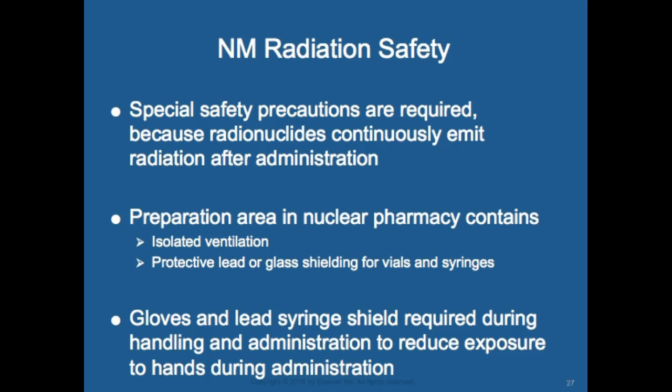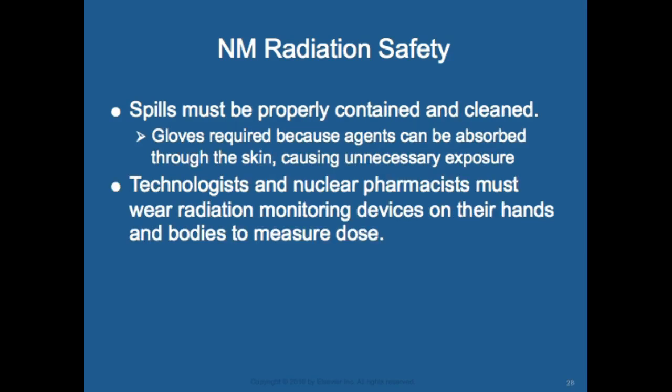Lead syringe shields are required during handling and administration to reduce exposure to the hands. Dose to the hands is a major concern for nuclear medicine technologists, who wear a ring dosimeter to detect radiation dose to their extremities. Spills must be properly contained and clean gloves are required because agents can be absorbed through the skin, causing unnecessary exposure. Technologists and nuclear pharmacists should wear radiation-detecting devices on their hands.